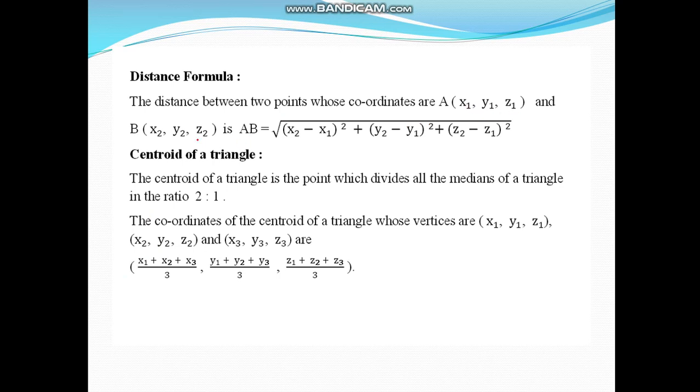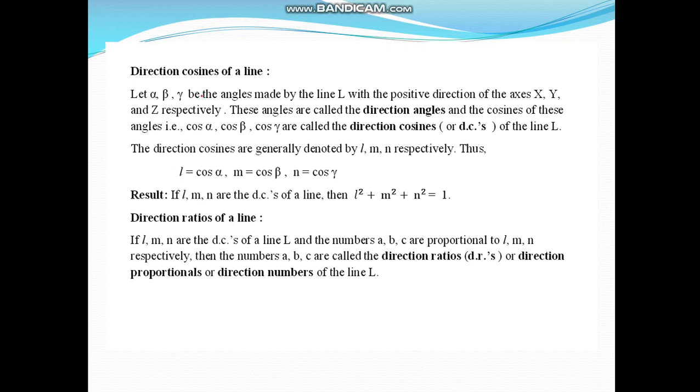Point A has coordinates (x₁, y₁, z₁) and point B has coordinates (x₂, y₂, z₂). As you know very well, the distance is given by: AB = √[(x₂ - x₁)² + (y₂ - y₁)² + (z₂ - z₁)²]. You can learn this formula. Then, the centroid of a triangle is given by this formula.